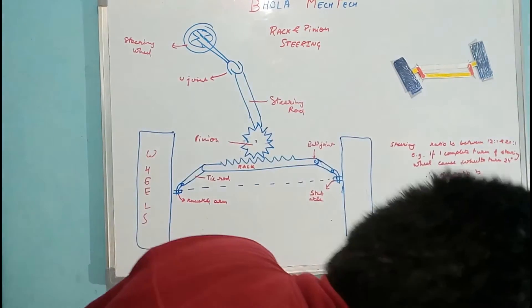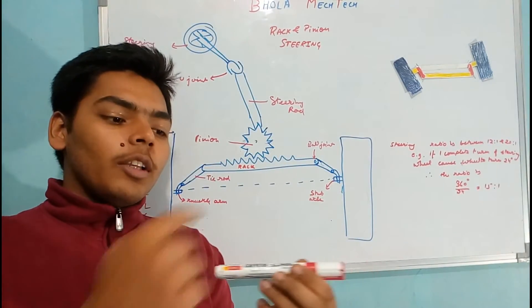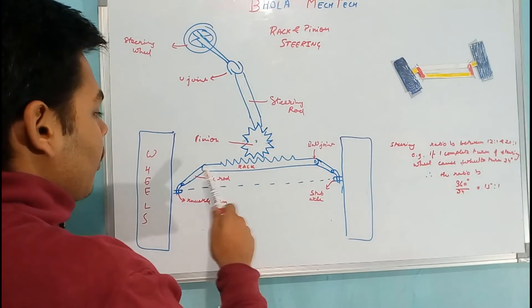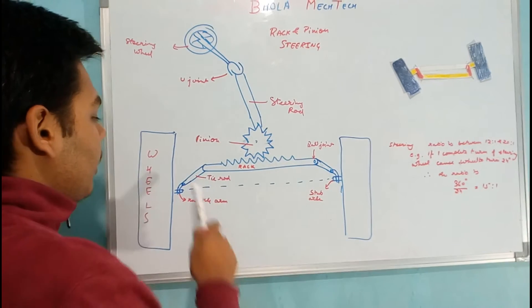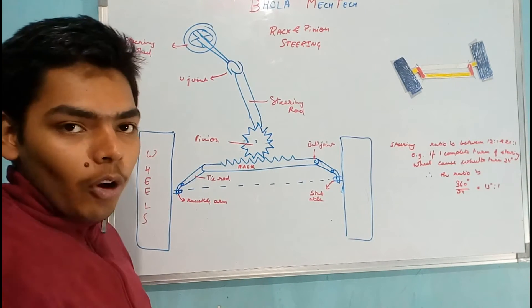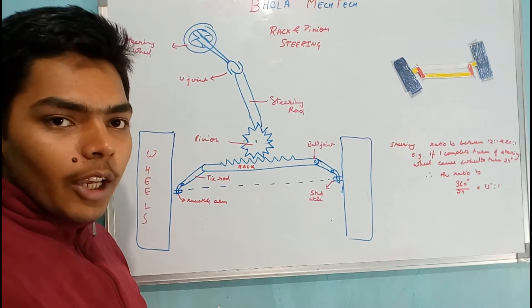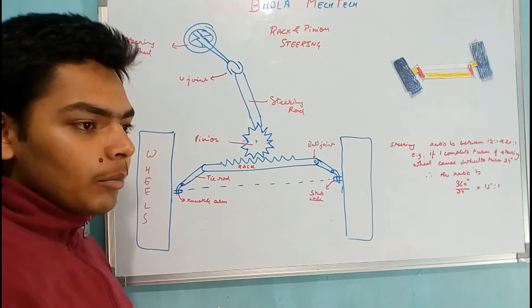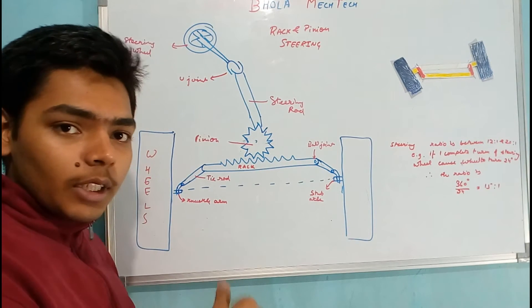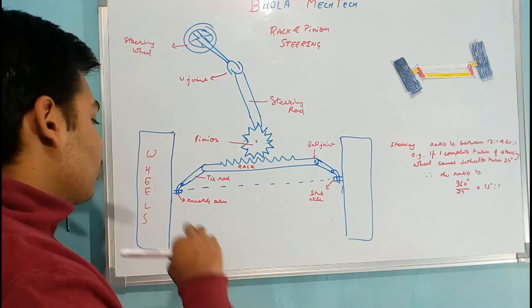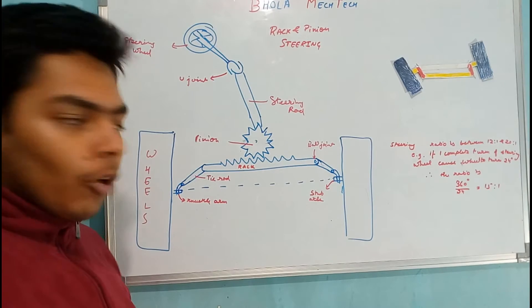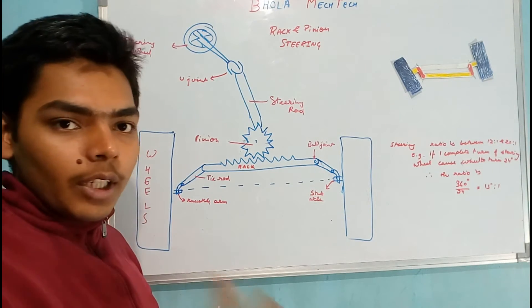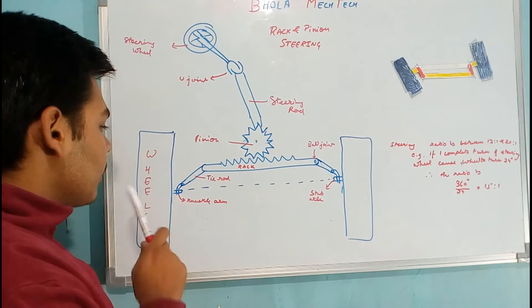The rack is a cylindrical rod in which gears are made, and that is known as the rack. At the two ends of the rack there is a tie rod, and the tie rod is connected to the rack by a ball joint. The ball joint gives freedom of motion to the tie rod and the rack. Then the tie rod is connected to the knuckle arm — the steering arm that is present with the knuckle. The knuckle arm and tie rod are again connected by a ball joint, and the knuckle arm is connected to the stub axle on which the wheel rotates.